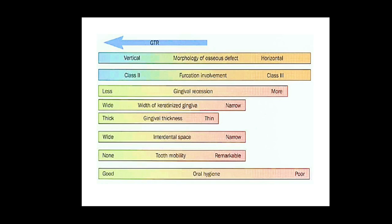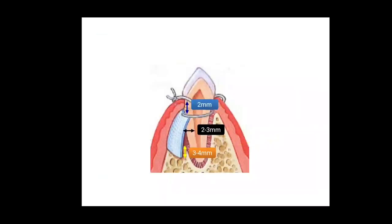Few measurements we need to keep in mind while placing membranes: the apical border of membrane should be 3 to 4 mm apical to the defect, laterally 2 to 3 mm beyond the defect. One more measurement, it should be placed 2 mm apical to the cemento-enamel junction of the teeth.